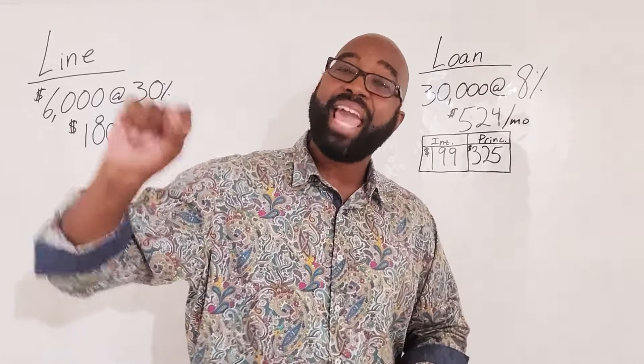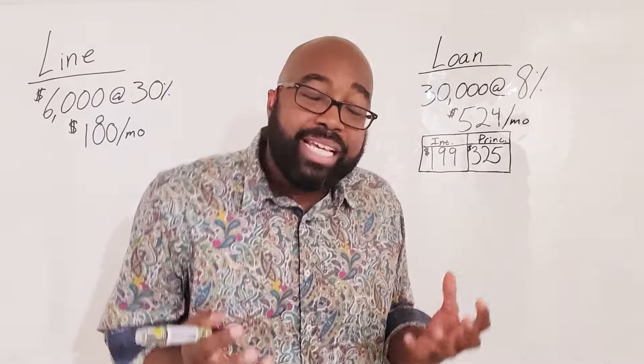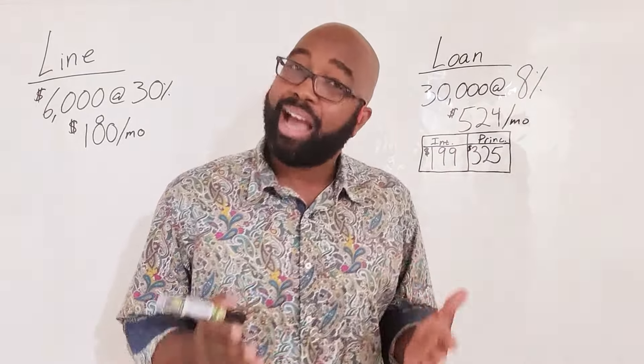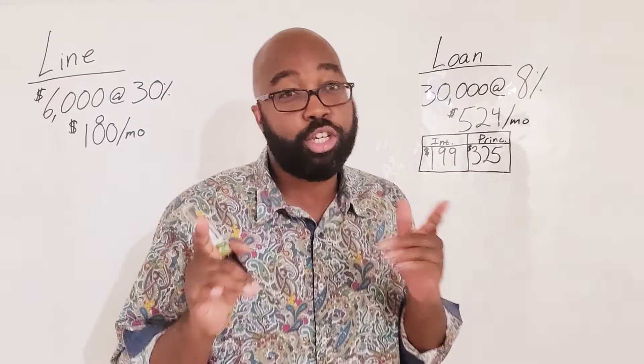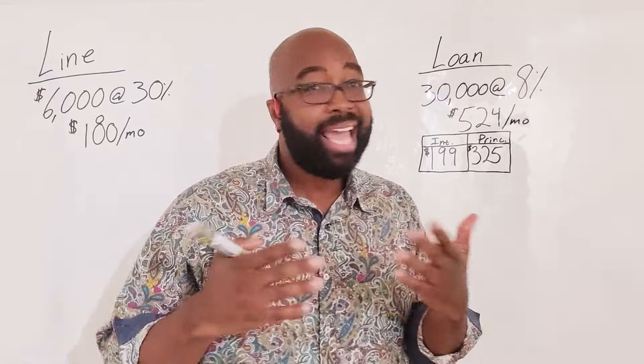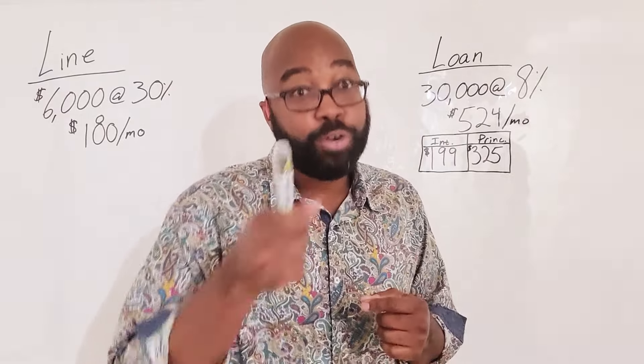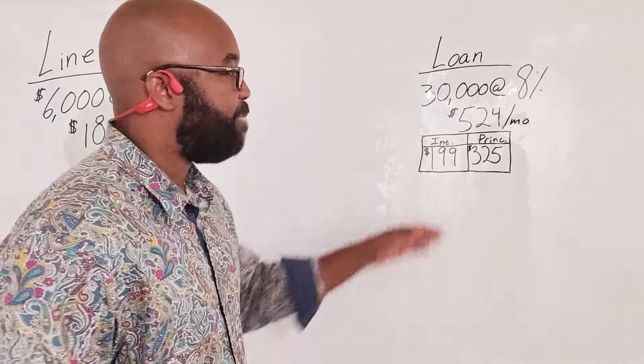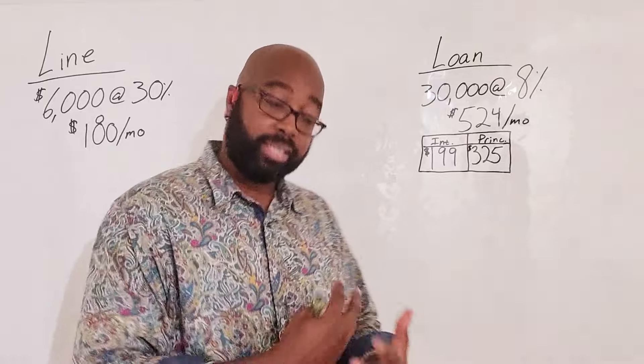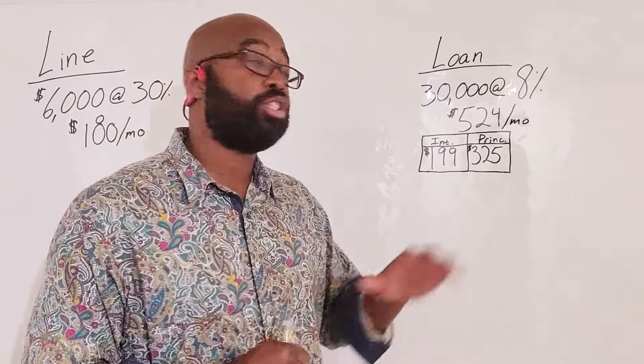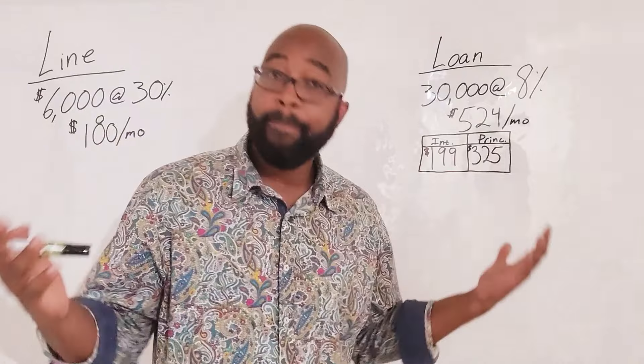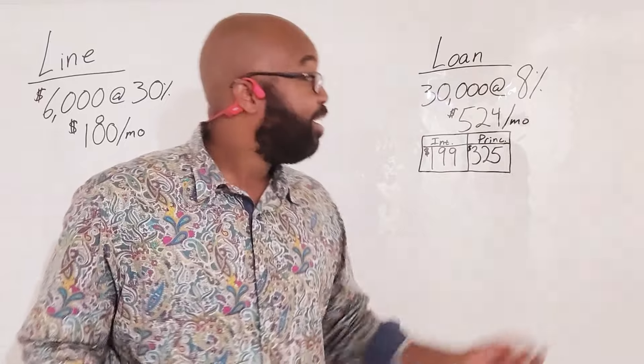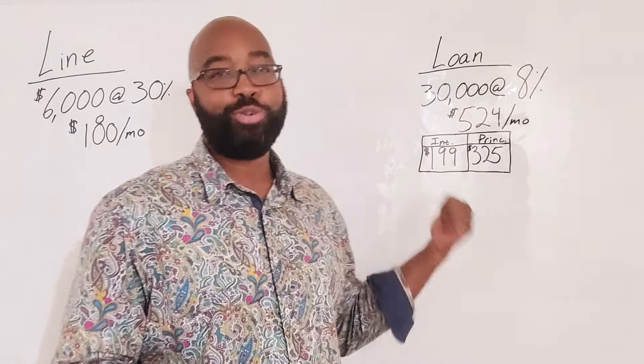Remember, when you are paying that $524 a month, the reason why your balance isn't going down that much is because it's being segregated. You remember we talked about segregating income, how it's a bad idea for you, but it's a great idea for the bank. And so, this is how they segregated. $199 is going to interest. The bank says, thank you very much. And $325 is going to the principal.